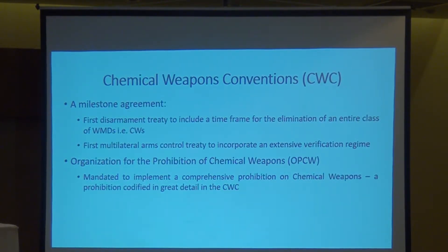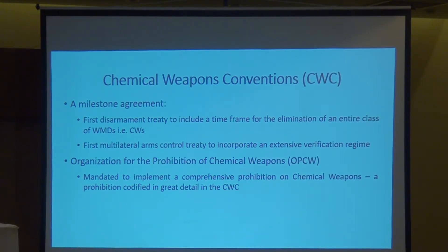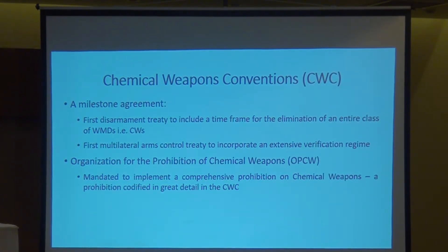Very briefly about the Chemical Weapons Convention: it is a milestone agreement, and not only is it the first disarmament treaty to include a time-bound framework for the elimination of an entire class of weapons of mass destruction — chemical weapons — but it is also the first multilateral arms control treaty to incorporate an extensive and expansive verification regime. CWC is implemented through the Organization for the Prohibition of Chemical Weapons, OPCW, which is mandated to implement a comprehensive prohibition on chemical weapons, as codified in the CWC.